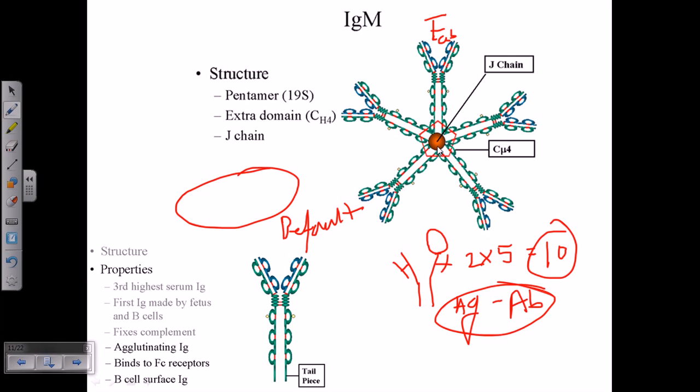With ten binding regions, IgM quickly agglutinates and binds antigens, rapidly fixing complement.